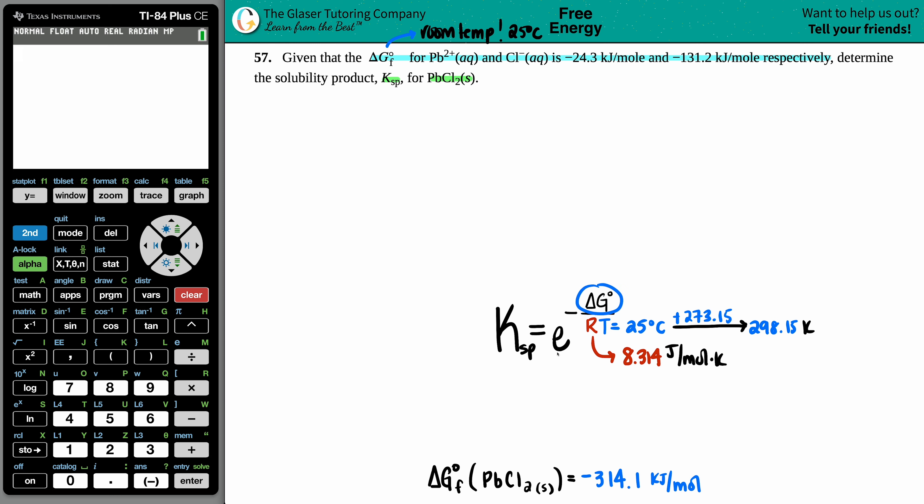This delta G is for the whole entire reaction, not individual delta G of formations. To get a delta G for a whole reaction, I first need a balanced equation. The solubility product means I'm taking the solid and breaking it down into aqueous material. So PbCl₂ solid breaks down into Pb²⁺ aqueous plus Cl⁻. I need two Cls here to balance, and now we're balanced.